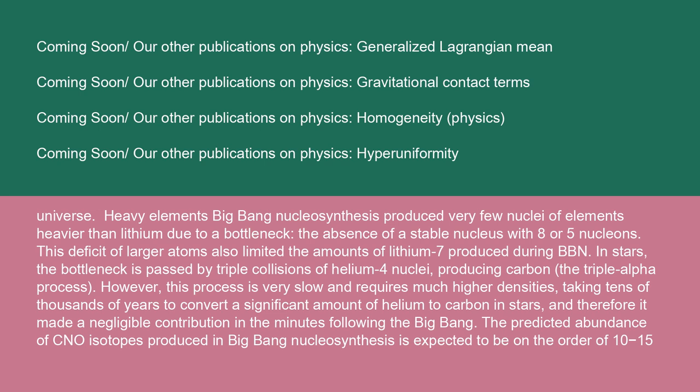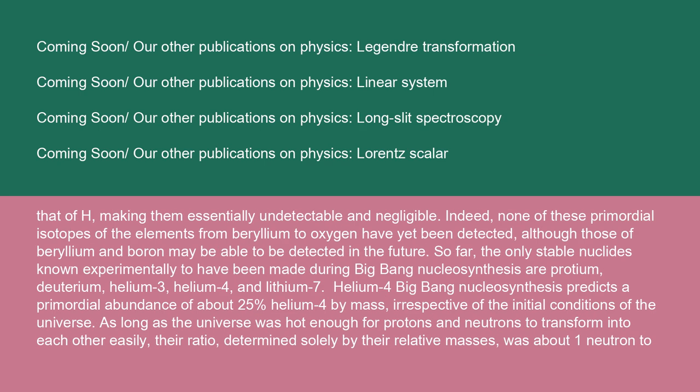Heavy elements: Big Bang nucleosynthesis produced very few nuclei of elements heavier than lithium due to a bottleneck, the absence of a stable nucleus with eight or five nucleons. This deficit of larger atoms also limited the amounts of lithium-7 produced during BBN. In stars, the bottleneck is passed by triple collisions of helium-4 nuclei, producing carbon, the triple alpha process. However, this process is very slow and requires much higher densities, taking tens of thousands of years to convert a significant amount of helium to carbon in stars, and therefore it made a negligible contribution in the minutes following the Big Bang. The predicted abundance of CNO isotopes produced in Big Bang nucleosynthesis is expected to be on the order of 10^-15, that of H, making them essentially undetectable and negligible. Indeed, none of these primordial isotopes of the elements from beryllium to oxygen have yet been detected, although those of beryllium and boron may be able to be detected in the future. So far, the only stable nuclides known experimentally to have been made during Big Bang nucleosynthesis are protium, deuterium, helium-3, helium-4, and lithium-7.